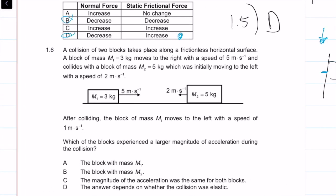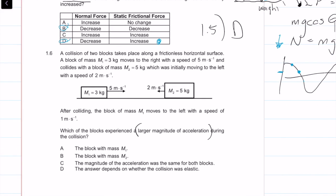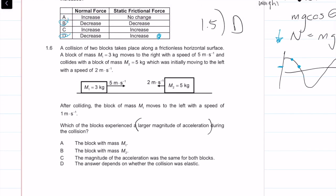A collision of two blocks takes place along a frictionless horizontal surface. Block M1 = 3 kg moves right at 5 m/s and collides with block M2 = 5 kg moving left at 2 m/s. After colliding, M1 moves left at 1 m/s. Which block experienced the larger magnitude of acceleration during the collision?